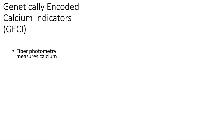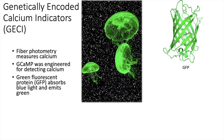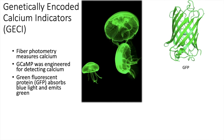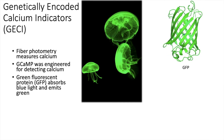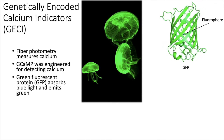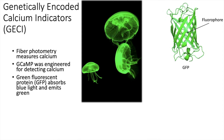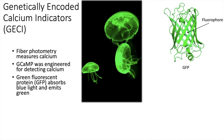Several advances allowed for the engineering of proteins that can fluoresce a specific color in the presence of calcium. The most commonly used calcium indicator is GCaMP and is basically a fusion of two proteins. One protein is the green fluorescent protein, which was first discovered in the jellyfish Aequorea victoria. This protein contains a fluorophore in the center and can absorb blue light and emit green light.